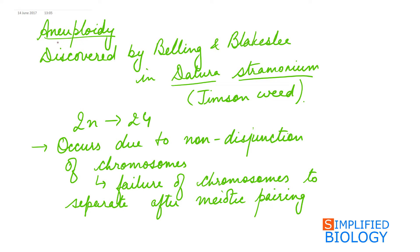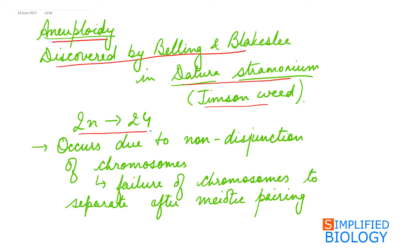Aneuploidy was discovered by Belling and Blakeslee in Datura stramonium, commonly known as Jimson weed. In Datura, the normal chromosome number is 24, but they found 25 chromosomes.